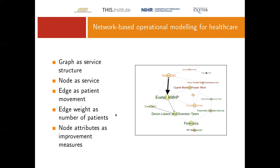We can embed different information about how services are operating within the graph itself. The edge weight — the thickness of the arrows — represents the number of patients moving through the system in a particular direction. There's a large number moving from Deltafield to the Allied Mental Health Partners team, and there appears to be a key triangle between the AMP team, the liaison diversion team, and the CRHT. This represents the activity occurring between two teams.